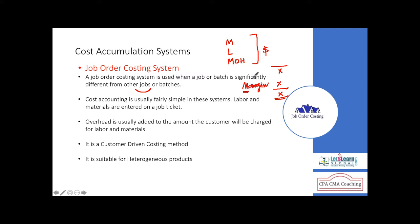Each job is different from the previous customer because we collected that customer's requirements. The amount charged differs from customer to customer. For each job you will have a job number and ticket number, and you inject the costs incurred on that job. Remember three costs: material, labor, and overhead. Since we wait for the customer's instructions before providing any cost, it is called a customer-driven costing method.